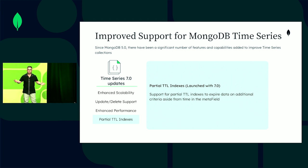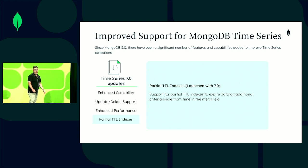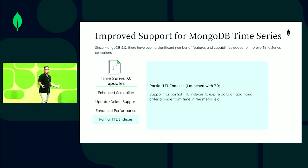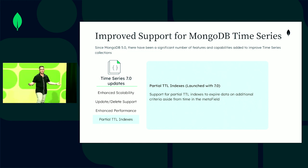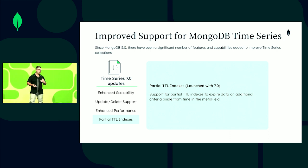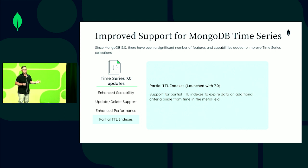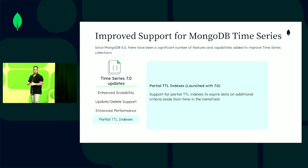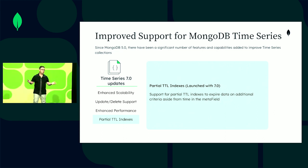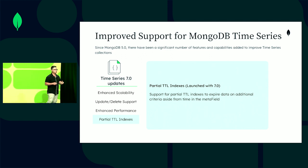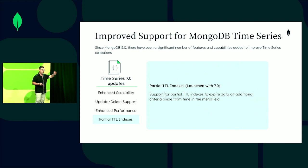Last but not least, we've introduced partial TTL indexes — sticking with the theme of enhanced user control. We talked about TTL indexes before; now you can create additional secondary indexes with TTL properties to expire data or control the lifecycle of your data based on not just the time but also what your meta field values are. For example, if you're collecting data with a customer ID as meta field and have two tiers — a free tier and a paid tier — your free tier might delete data every seven days to incentivize upgrading, while your paid tier keeps data for 45 days or forever. You can now define multiple TTL indexes to accomplish these fine-grained deletions in an automated way.